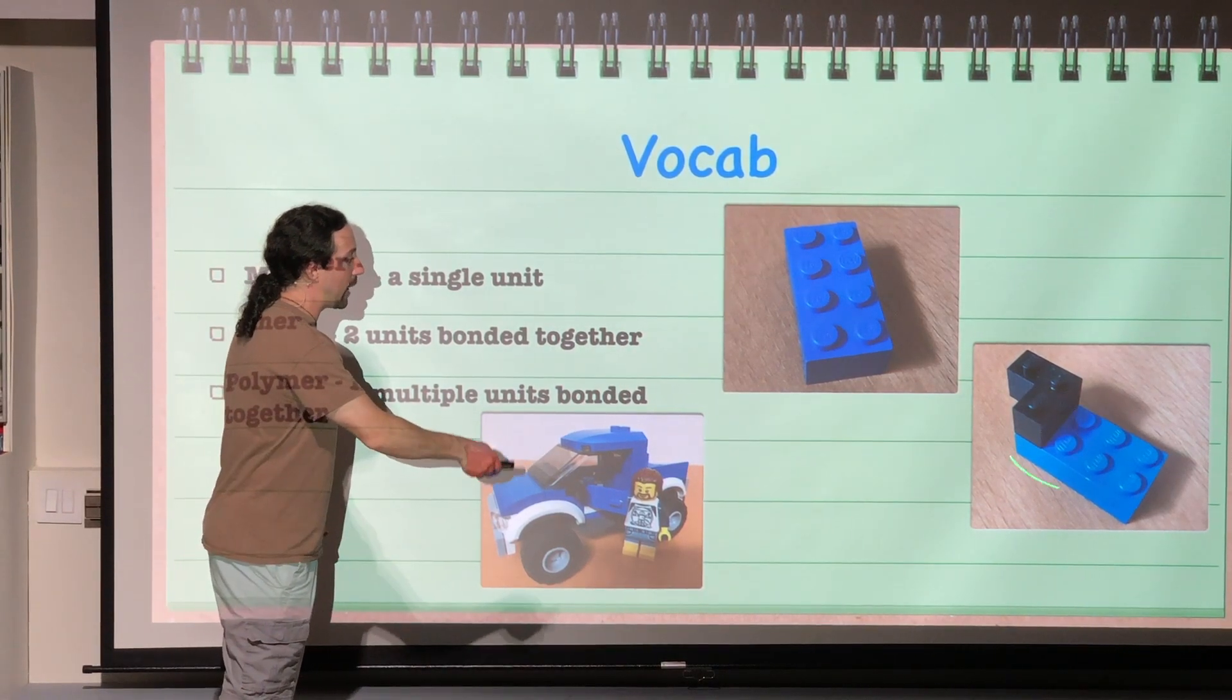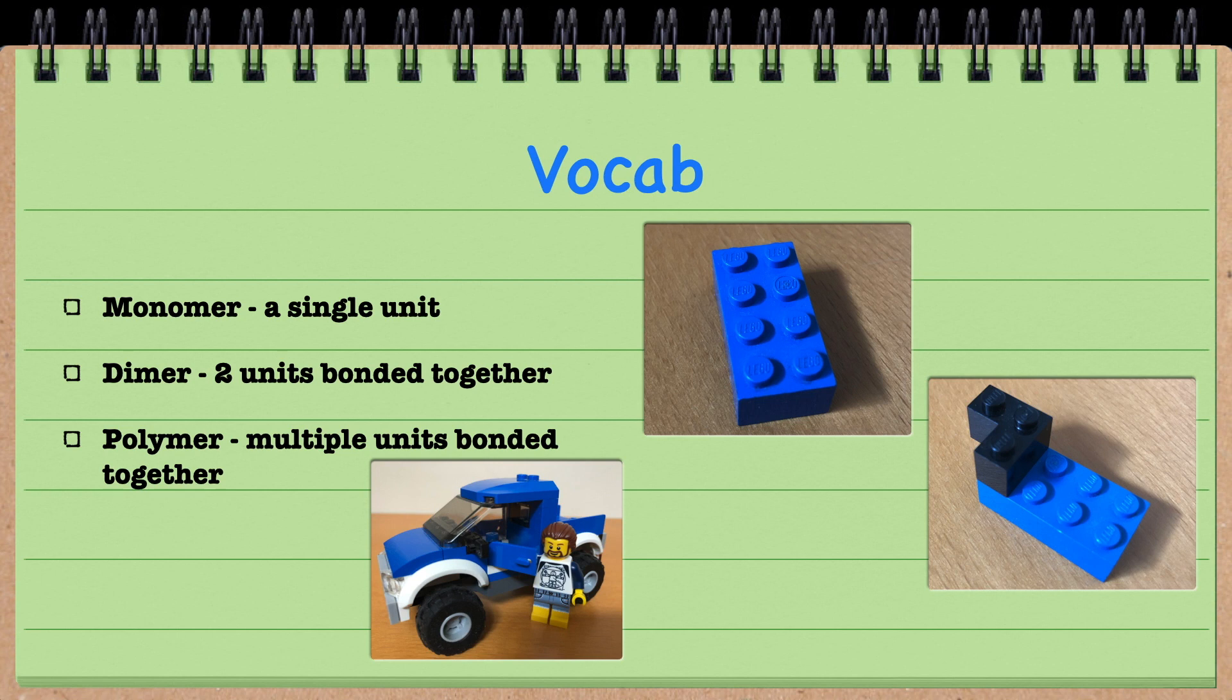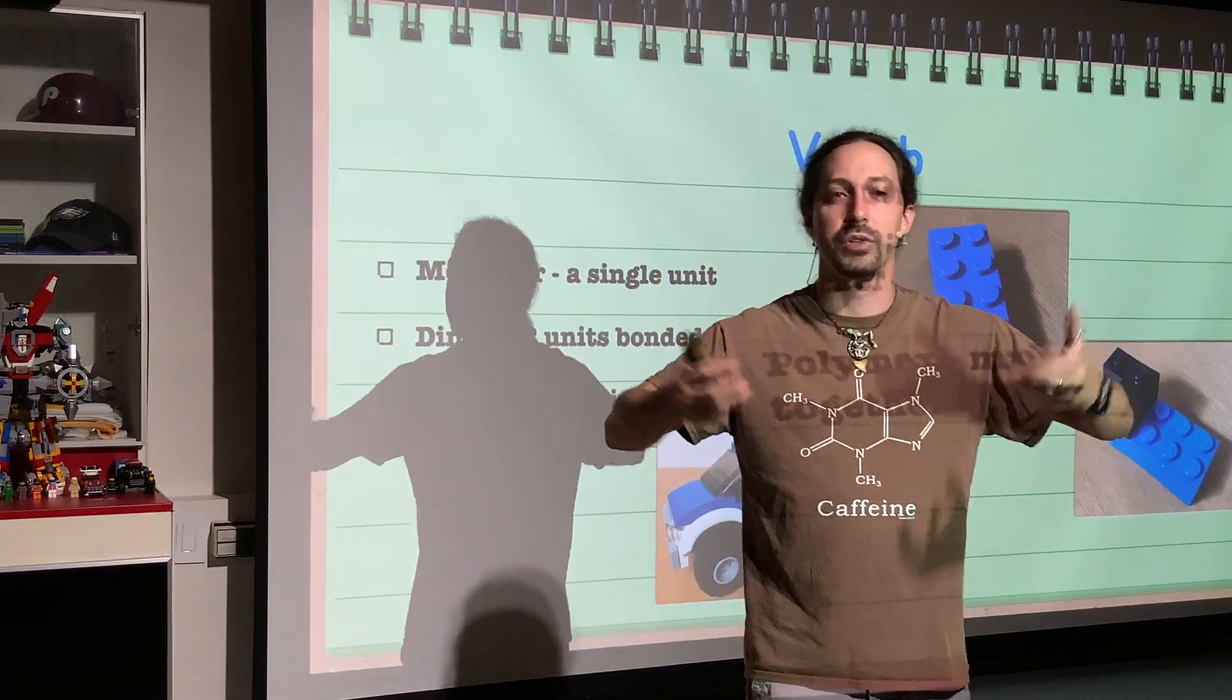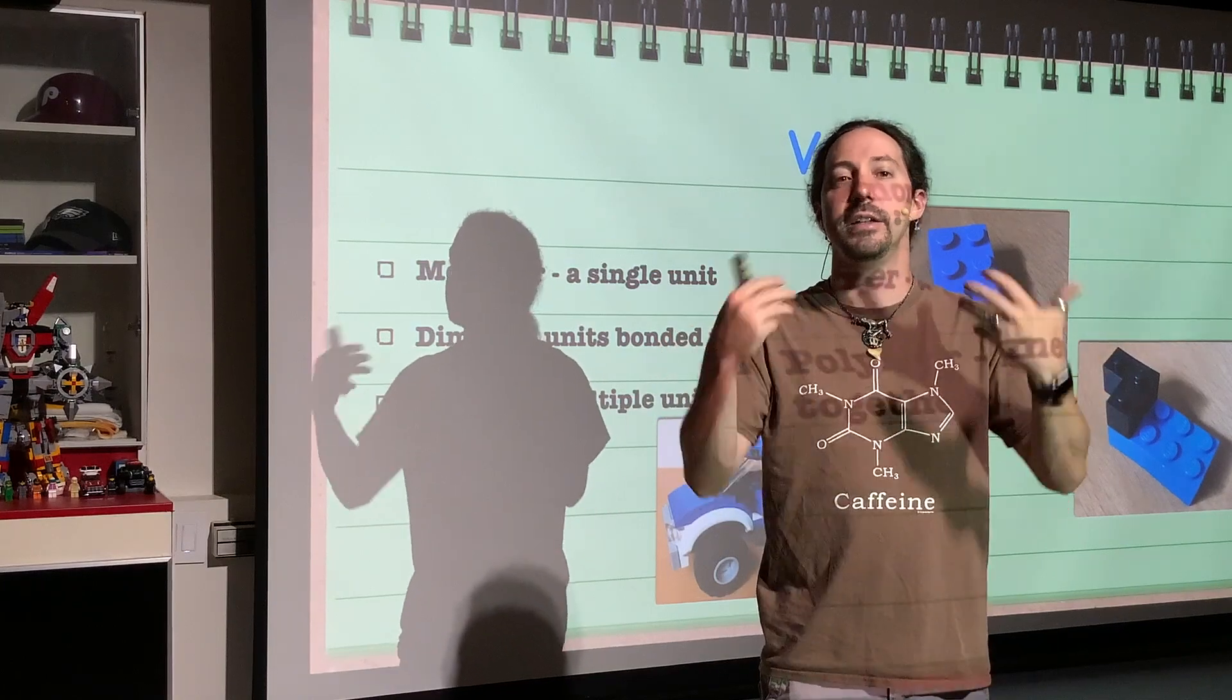When we put two Lego bricks together, then we end up with what we would call a dimer. It is two bonded units together. So when we take two of our different types of molecules and we put them together, we end up with a dimer.